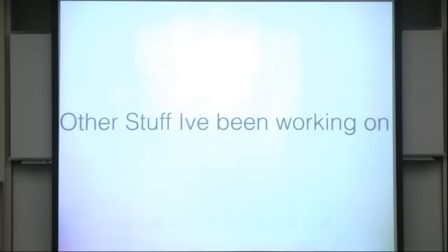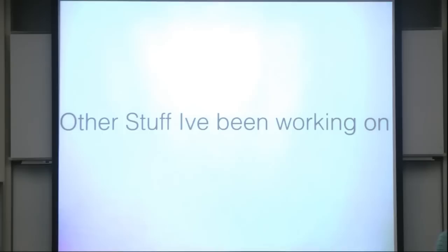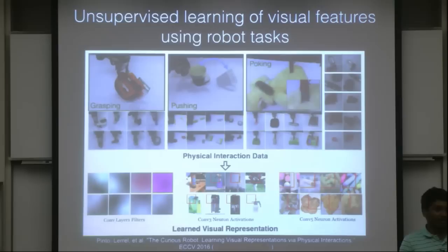Now I'll start talking about other work I've been doing. The first is unsupervised learning of visual features. The motivation is that we have so many robot tasks and a lot of robot data — given all this visual data that robots have collected, can we use it to learn features helpful in non-robot tasks? This work is going to be presented at ECCV.